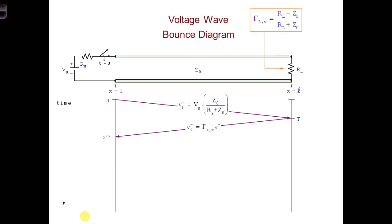Likewise, the line labeled with V2 plus shows where the leading edge of the second positive traveling voltage wave is at any given moment in time. V2 plus is calculated by multiplying V1 minus by the voltage reflection coefficient at the generator.